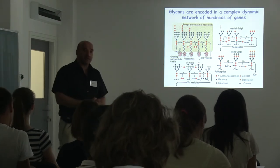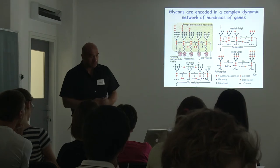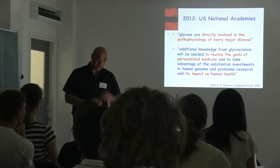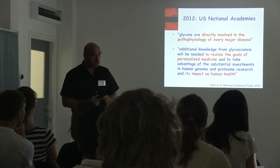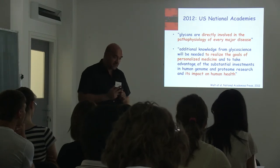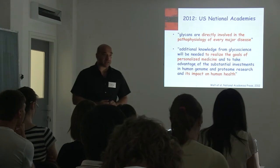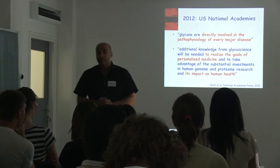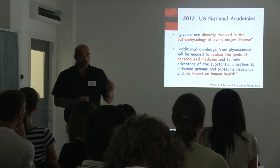For decades, people were thinking that glycans are some kind of random product — that any glycan on a given site on a protein will do its function. But this is not so. Fortunately, two years ago there was a large report published and endorsed by the US National Academies which clearly stated: glycans are directly involved in the pathophysiology of every major disease. They also said additional knowledge from glycoscience will be needed to realize the goals of personalized medicine and to take advantage of investments in human genome research. More or less, the US National Academies concluded: you should be studying glycans.